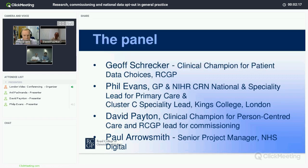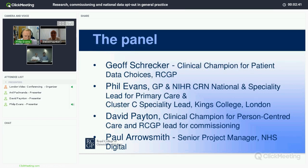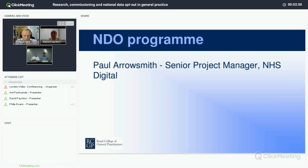For our panel: I'm the clinical champion for patient data choices. Phil Evans is a practicing GP who's also in the National Institute for Health Research Clinical Research Network. David Paynton is a clinical champion with the RCGP and lead for commissioning. And Paul Arrowsmith is the senior project manager at NHS Digital, charged with making sure that all of this works smoothly and efficiently. I'm going to hand over to Paul to walk us through where NHS Digital is up to with the programme.